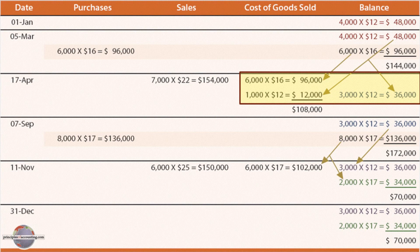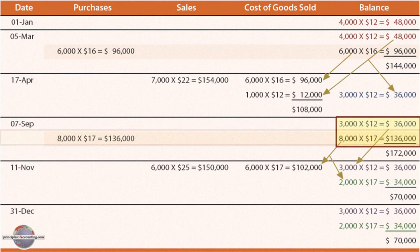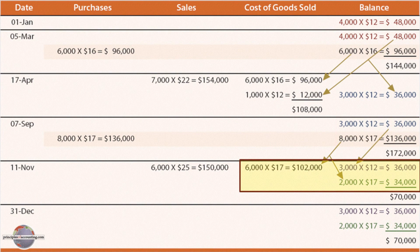That gives us $108,000 of cost of goods sold for that transaction, entered as a journal entry: debit cost of sales and credit inventory. This leaves us 3,000 units at $12 — those are 3,000 of the original 4,000 from beginning inventory. On September 7th, we buy 8,000 units at $17, giving us a total in-stock supply of 11,000 units: the 3,000 at $12 carried forward plus 8,000 more at $17.